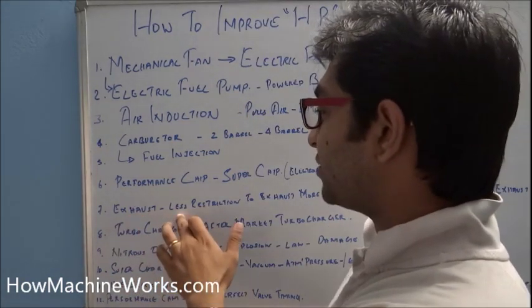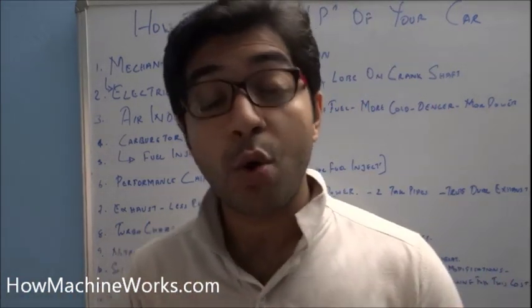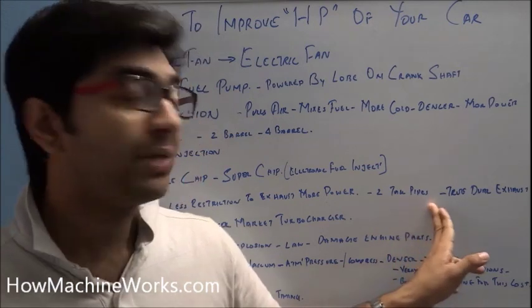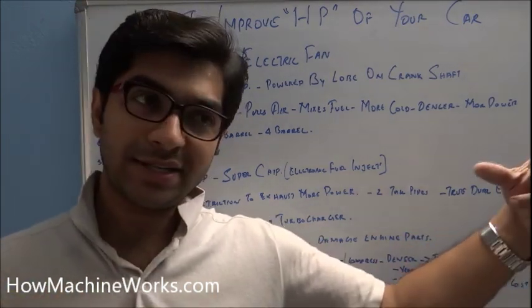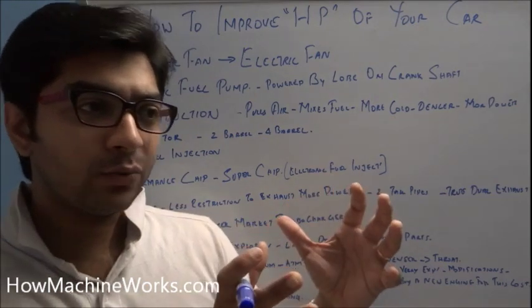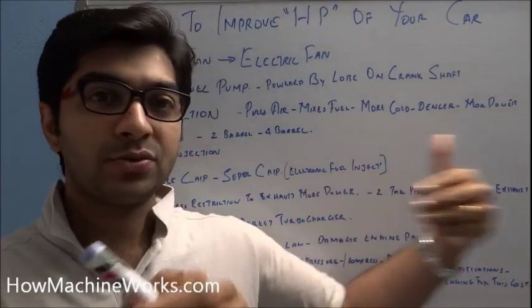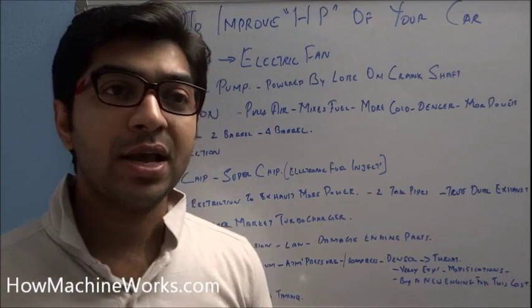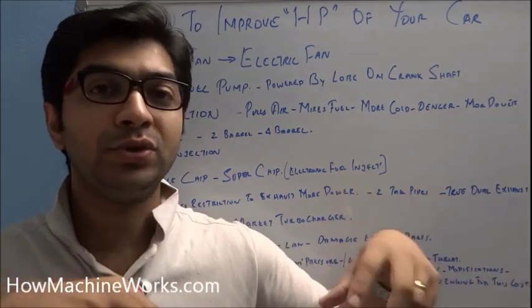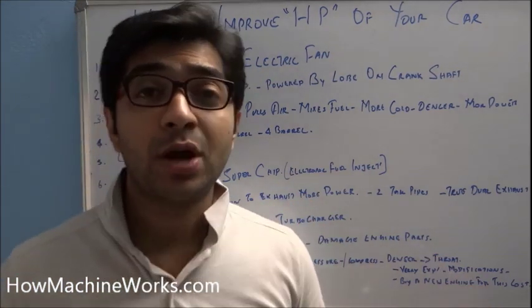The seventh tip is improving the exhaust system. The exhaust system should be free-flow. If there's restriction to the exhaust, that reduces horsepower—less restriction means more power. Normally, if your vehicle has two exhaust pipes and the exhaust comes from the engine as a single line into the catalytic converter then splits into two pipes, it chokes inside the catalytic converter. A dual exhaust system should be made so exhaust flows freely. You can remove the catalytic converter as per your state or country laws, or put two catalytic converters in both tailpipes.